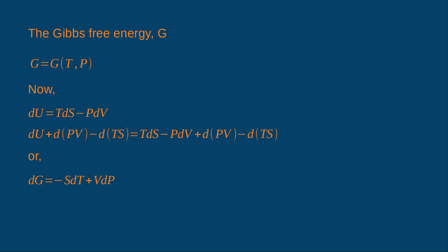Gibbs free energy for a pure fluid is a function of temperature and pressure. From the first law we know that dU = TdS - PdV. Now if we add d(PV) and -d(TS) on both sides, we get dG = -SdT + VdP.